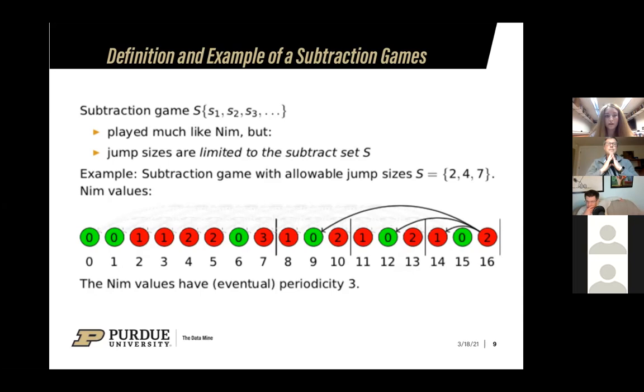For example, with number 16 on the end, we can jump back 2, and then we'll get 1. We jump back 4, and we'll get 0. We jump back 7, and then we get 0. Which leaves us with 1, 0, and 0, which means that for the answer, we would get 2 for right here. As we start to calculate NIM values, they have an eventual periodicity of 3. So for another example, if we look back at 15, right here, we jump back 2, we would get 2. Jump back 4, we would get 1.